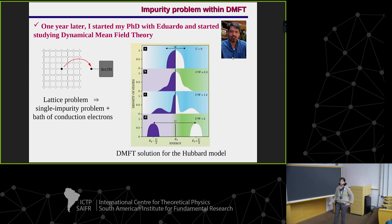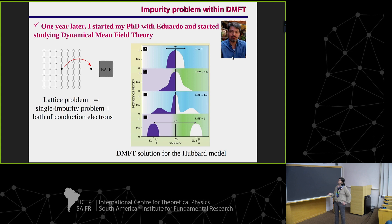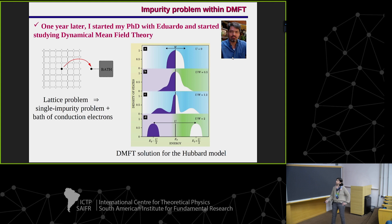About one year after that, I decided to do my PhD with Eduardo, and the Kondo effect was again important in the work I did during my PhD because I was using dynamical mean field theory. You probably recognize this famous picture of the Mott transition — it's the DMFT solution for the Hubbard model. This is the density of states as a function of energy for different values of the interaction U, and for intermediate values of U we have this three-peak structure. This peak around the Fermi energy is related to the Kondo effect, because when we do DMFT we map the lattice problem onto a single impurity problem, which is one of the ways to describe the Kondo effect.